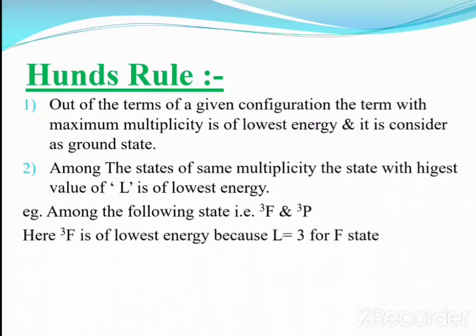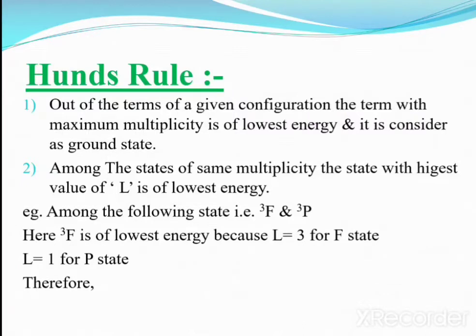For example, the RS terms ³F and ³P have the same spin multiplicity. Here, ³F is the lowest energy because L = 3 for the F state and L = 1 for the P state. Since a higher value of L gives lower energy, ³F is the lowest energy term according to rule number two.